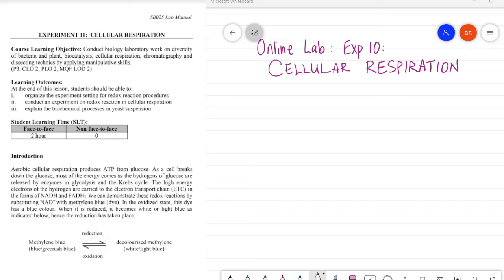Now, before we go on with the procedures, let's have a look at the learning outcomes for this experiment. If you were able to do this experiment in person, you would be able to learn to organize the experiment setting for redox reaction procedures, conduct an experiment on redox reaction in cellular respiration, and also explain the biochemical processes in yeast suspension. Now, it seems that 1 and 2 is not able to be achieved this time since you're not able to do this in person, but that's okay. We'll try to make up for it by learning about it in this way.